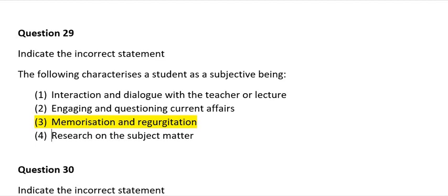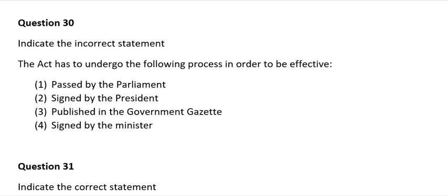Question 30: Indicate the incorrect statement. An act has to undergo the following process in order to be effective: 1) Passed by Parliament; 2) Signed by the President; 3) Published in the Government Gazette; 4) Signed by the Minister. The correct answer is number 4: signed by the Minister — this is NOT part of the correct process.